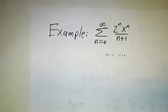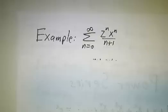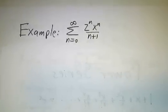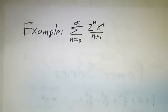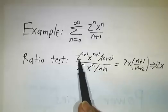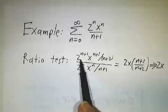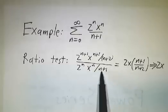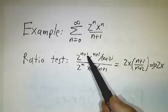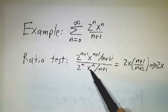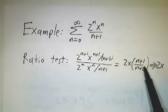So as an example, let's look at the sum of 2 to the n x to the n over n plus 1. Now, the way we can figure out the interval of convergence is by applying the ratio test. So we look at the n plus first term, 2 to the n plus 1 x to the n plus 1 over n plus 2, divided by the nth coefficient and we see that a lot of things cancel. All but one of the powers of 2 cancel, all but one of the powers of x cancel.